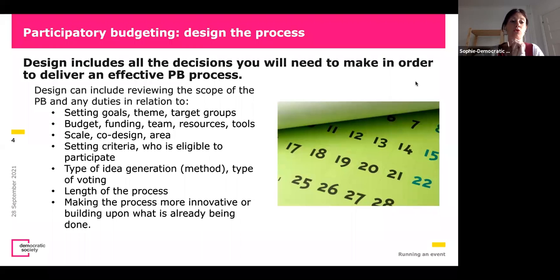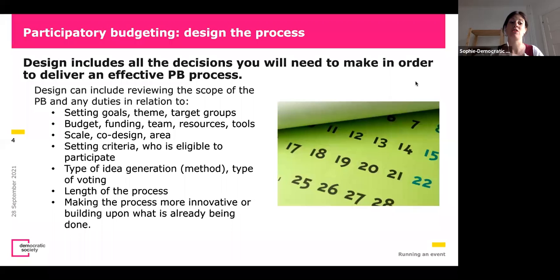Here is a summary of what should be in your design: setting goals, a theme, a target group. This can be some specific groups in society, or you might say you want to reach a most representative sample in society. It's also related to resources — budget, funding, team, specific digital tools — and the skill of co-design. Do you want to co-design with people in the community? Also consider the area you're thinking of, the criteria, and who can participate.